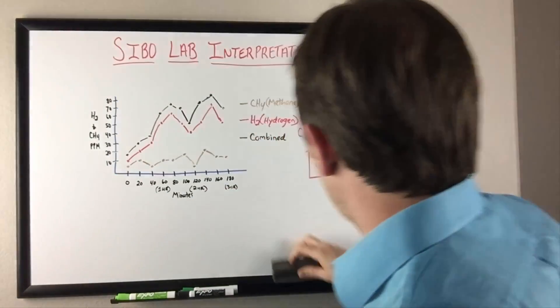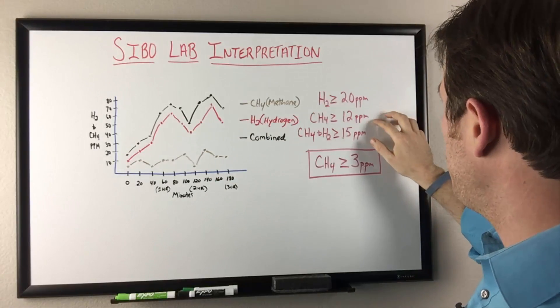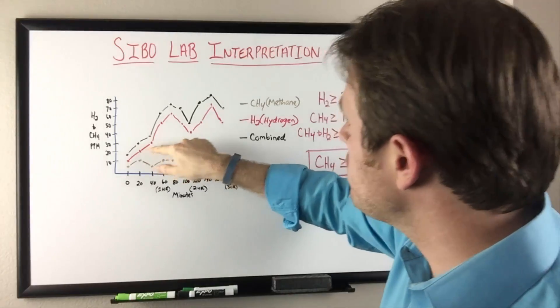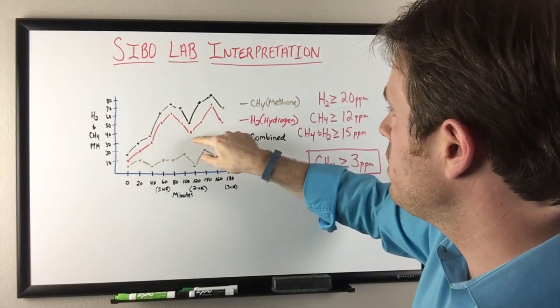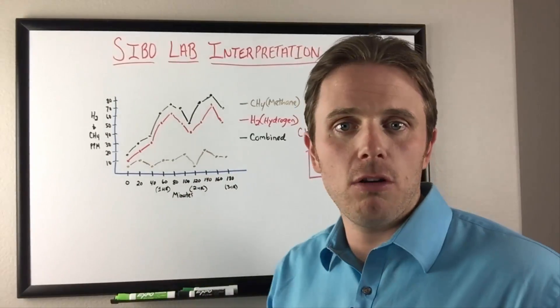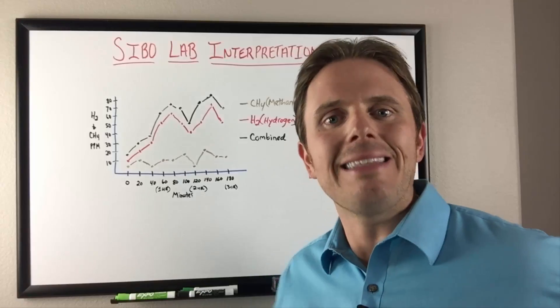When we're looking here for either hydrogen greater than 20 or methane greater than 12 or combo greater than 15, we're looking at one sample to the next. So let's break it down. If you're looking at your lab test and trying to figure out what am I looking at here, let's dig in.